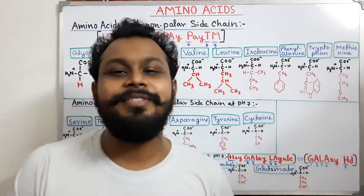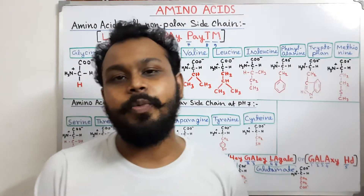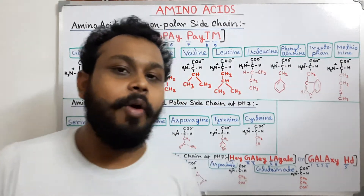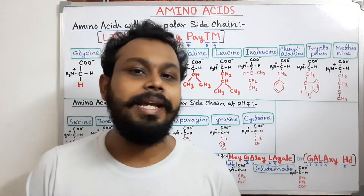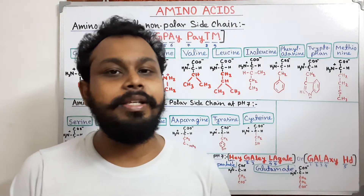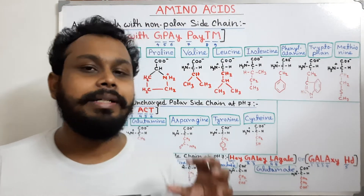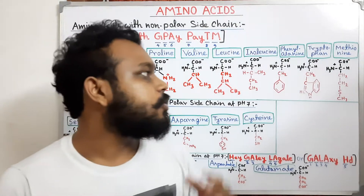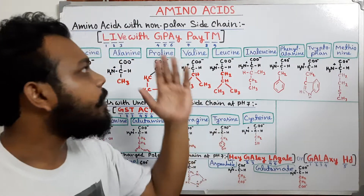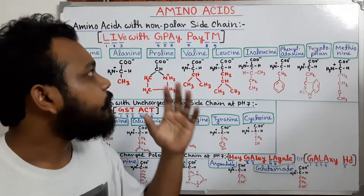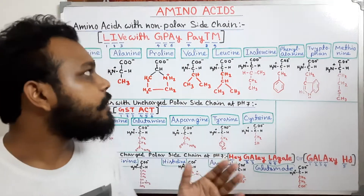Hello friends, today in this video we are going to discuss the easiest way to remember all the standard amino acids which are present in our body. We will use some tricks to memorize all the standard amino acids. In total, 20 amino acids are present in our body.